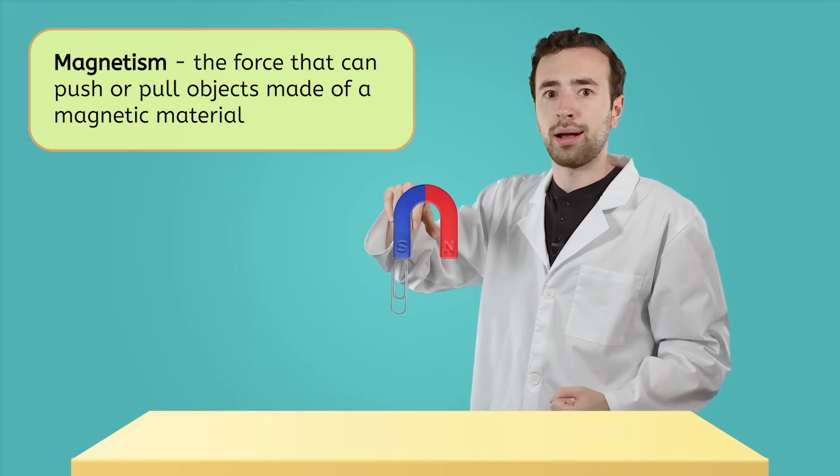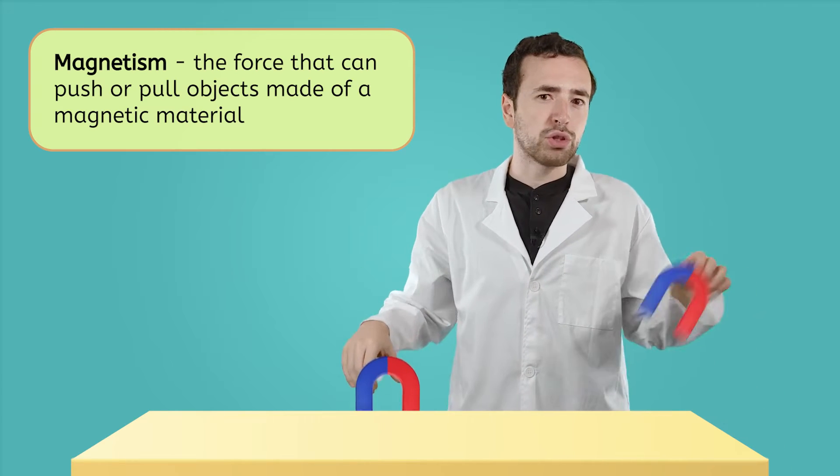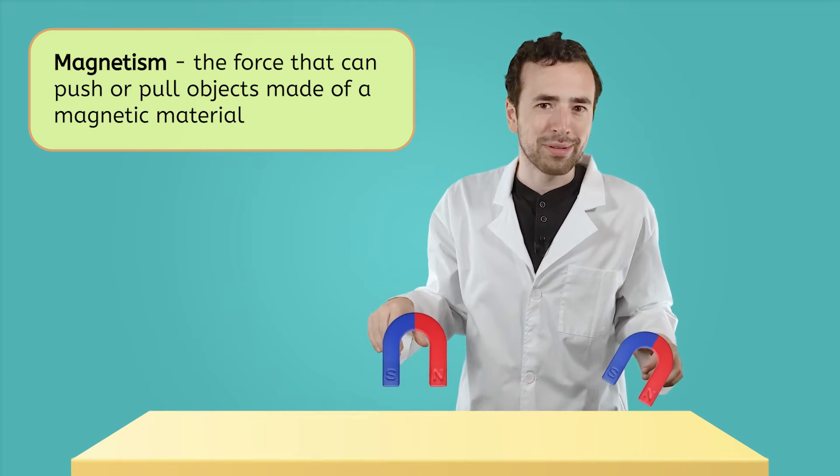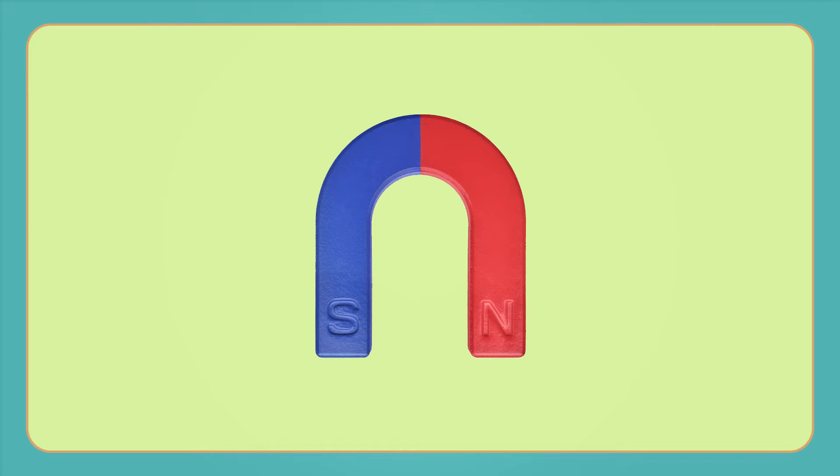Oh, I have an idea. Let's see what happens when we put two magnets together. Magnets have two different sides called poles. They have a north pole and a south pole. If you look at the ends of a magnet, you'll see a red side with an N and a blue side with an S. The N stands for north and the S stands for south. That's how you can tell which pole is which.